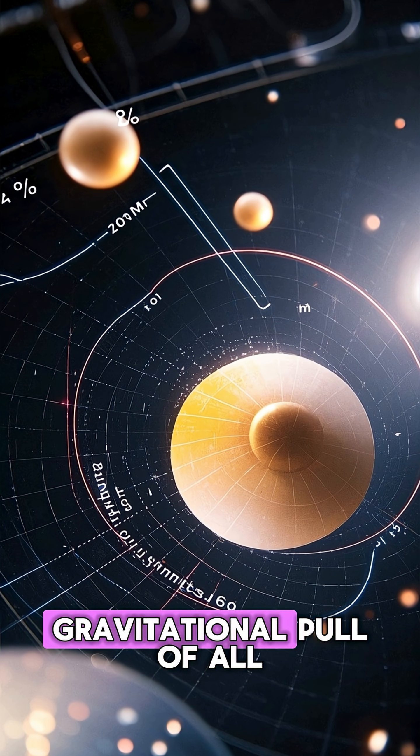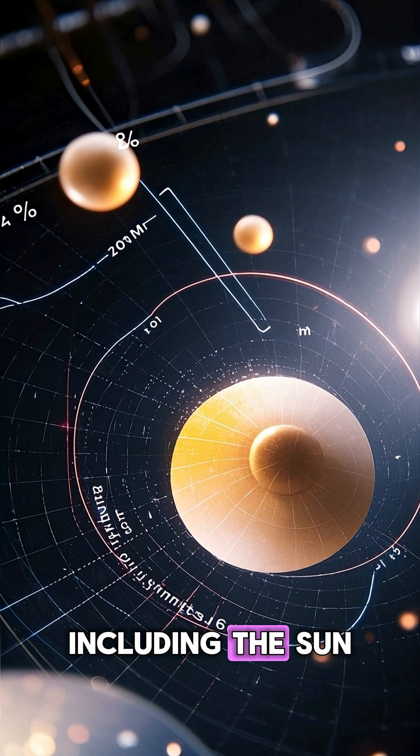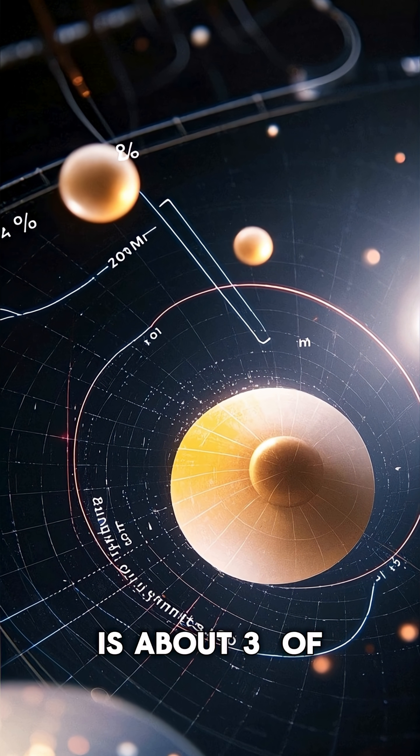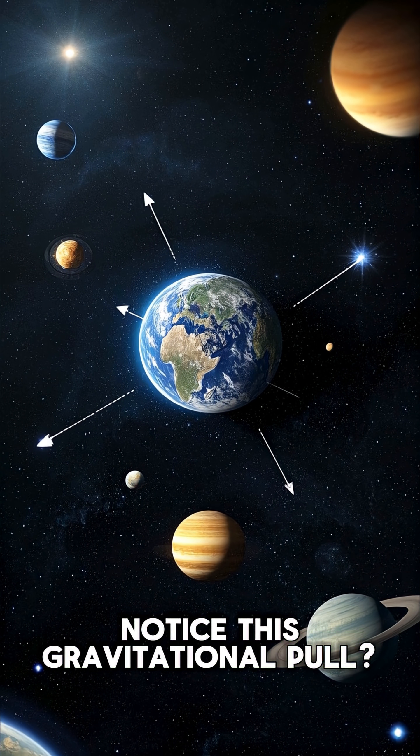In fact, the combined gravitational pull of all the planets in the solar system, including the sun, is about 3% of Earth's total weight. So why don't we notice this gravitational pull?